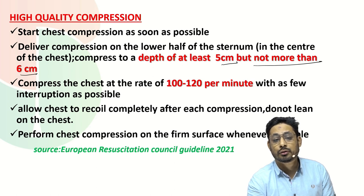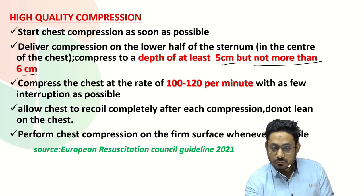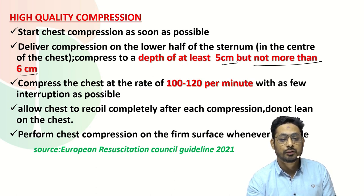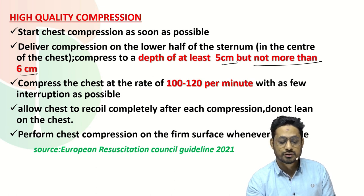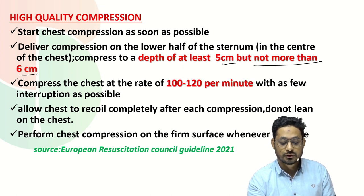The next component is the rate of compression: 100 to 120 compressions per minute with as few interruptions as possible. Another component is to allow the chest to recoil completely after each compression — do not lean on the chest. The depth should be at least 5 centimeters but not more than 6 centimeters, the rate should be 100 to 120 per minute, and the chest should recoil completely before the next compression. Perform chest compressions on a firm surface whenever possible. These are the components of high quality CPR per the European Resuscitation Council guideline 2021.